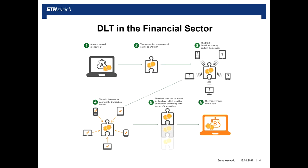These pictures illustrate how this works: person A wants to send money to person B. This transaction is represented as a block, which is broadcast to every node in the network. If there is consensus — if everyone agrees — the block is attached to the blockchain and person B receives the money. This is much more efficient than our current processes, which are still very manual.